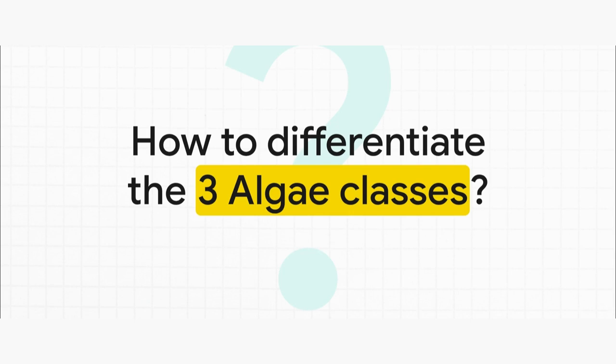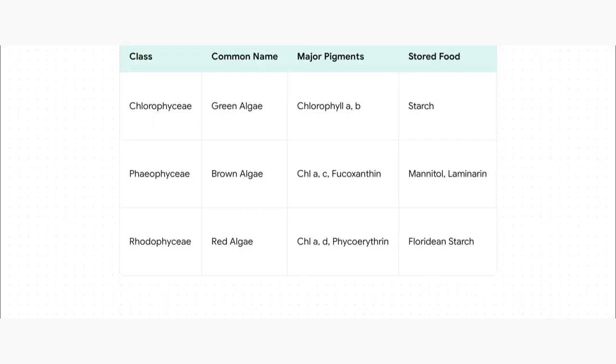Moving on to a really, really high-yield topic: the three classes of algae. You get those direct matching questions from this part in NEET all the time. So the big question is, how do we tell them apart based on their pigments and their stored food? Let's just run through this table really quick. It's super simple.